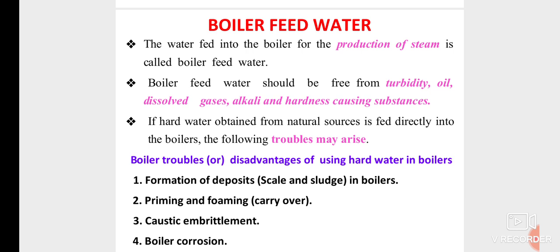Suppose we add water directly into the boiler — some troubles occur. The main troubles are: formation of scale and sludge, formation of priming and foaming, caustic embrittlement, and boiler corrosion. These are the main troubles that occur inside the boiler when impure or contaminated water is added. Another name for boiler troubles is the disadvantages of using hard water in the boiler. We will see each one — scale, sludge, priming, foaming, caustic embrittlement, and boiler corrosion — one by one in the next slides.